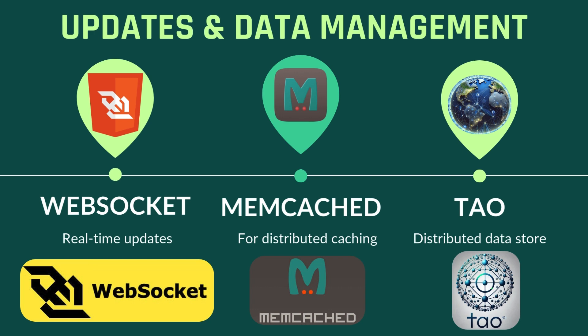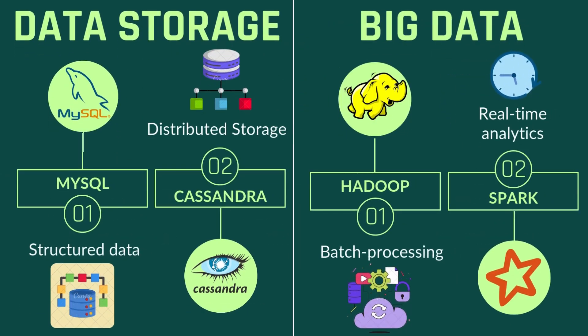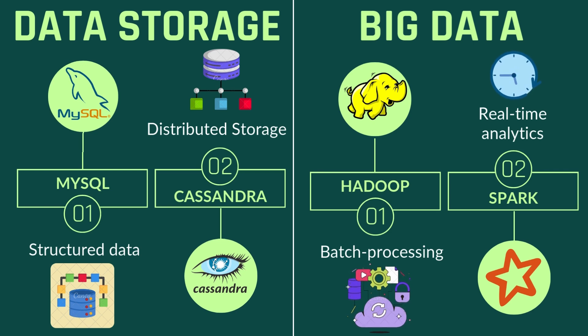To manage data efficiently, Facebook uses Memcached for distributed caching, speeding up access to frequently requested data. Alongside it, TAO serves as a geographically distributed data store for Facebook's social graph, ensuring low-latency access to user data. Together, they keep your interactions fast and responsive. Facebook also handles massive amounts of data using a combination of MySQL and Cassandra — MySQL manages structured data and transactional needs, while Cassandra provides high availability and scalability for distributed storage.